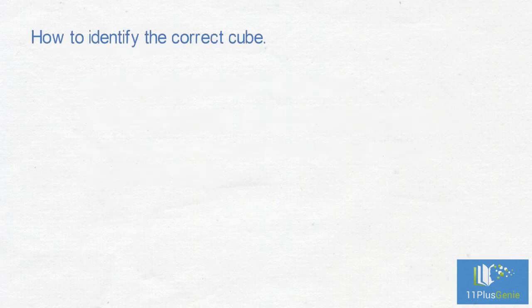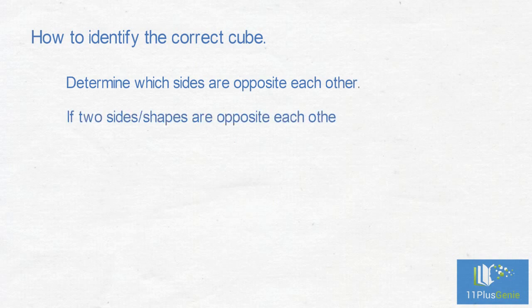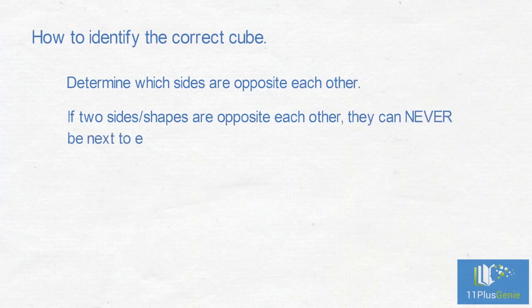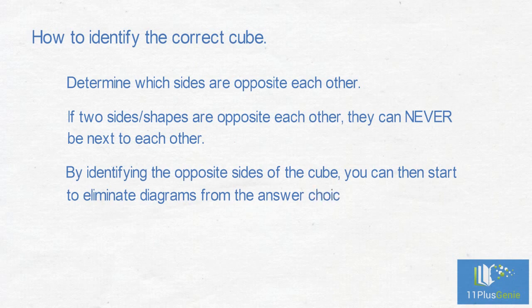How to identify the correct cube: One way of answering these questions is to determine which sides are opposite each other. If two sides or shapes are opposite each other, they can never be next to each other. By identifying the opposite sides of a cube, you can then start to eliminate diagrams from the answer choices.